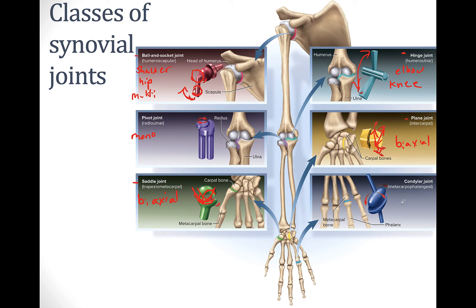Condylar joints are joints found on condyles. Examples include the mandibular condyle in the jaw joint, as well as condylar joints in the fingers. The condyle can rotate in its socket along two axes, so this is another bi-axial joint.